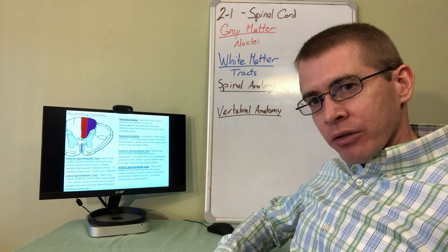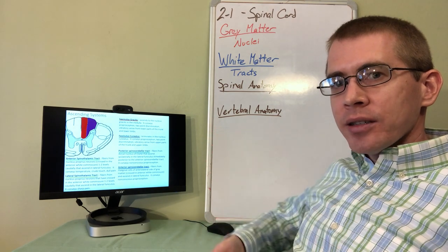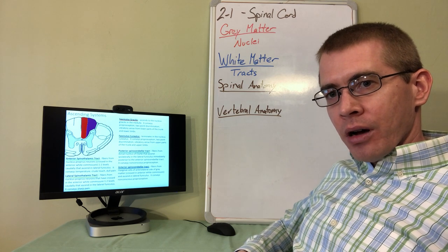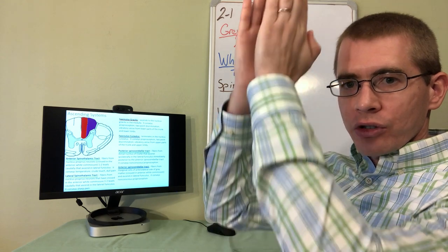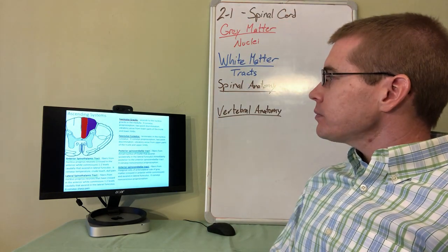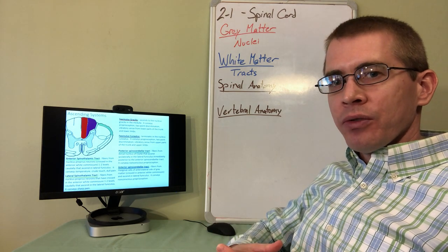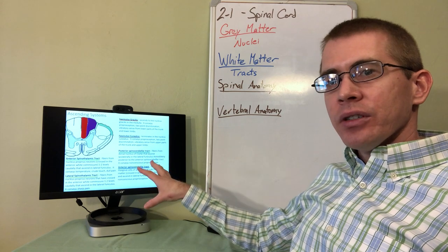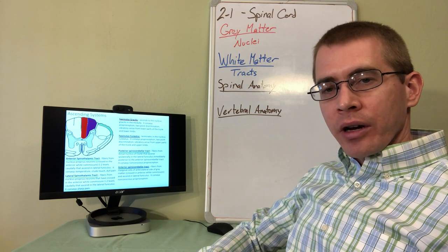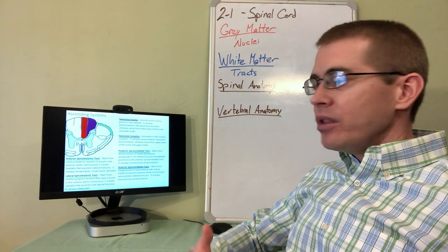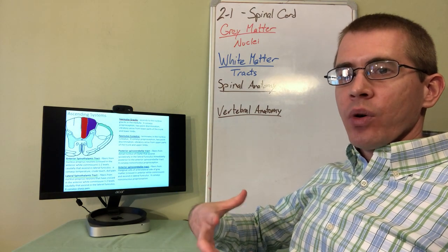As we ascend from the sacrum to the lumbar portions, the fasciculus gracilis gets bigger and bigger in each spinal cord section, until we reach the thoracic region where it stops growing and maintains its size all the way up to the brain. This is critical diagnostic information: if a patient can't sense anything from their legs, you know they have damage to the fasciculus gracilis, and you can predict the location of damage without any imaging.